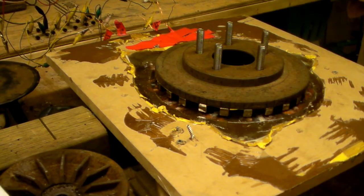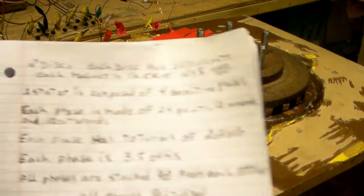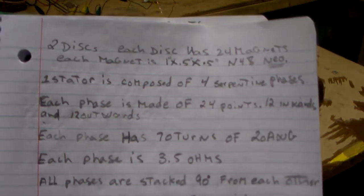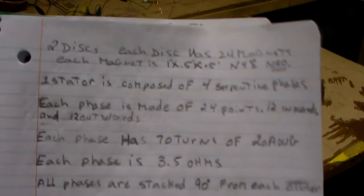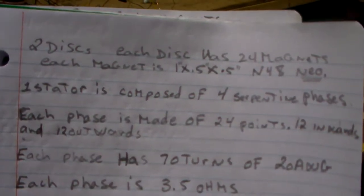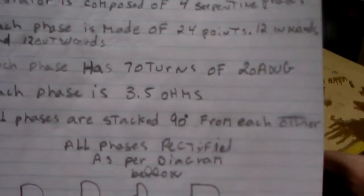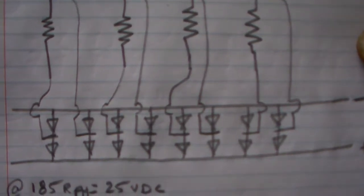Okay guys, I decided to build a serpent coil axial flux generator just to educate myself. Here's the information I have: two discs, one stator, four phases, 70 turns of 20 gauge wire, and this is the rectification with no neutral point, just all ends to rectify.